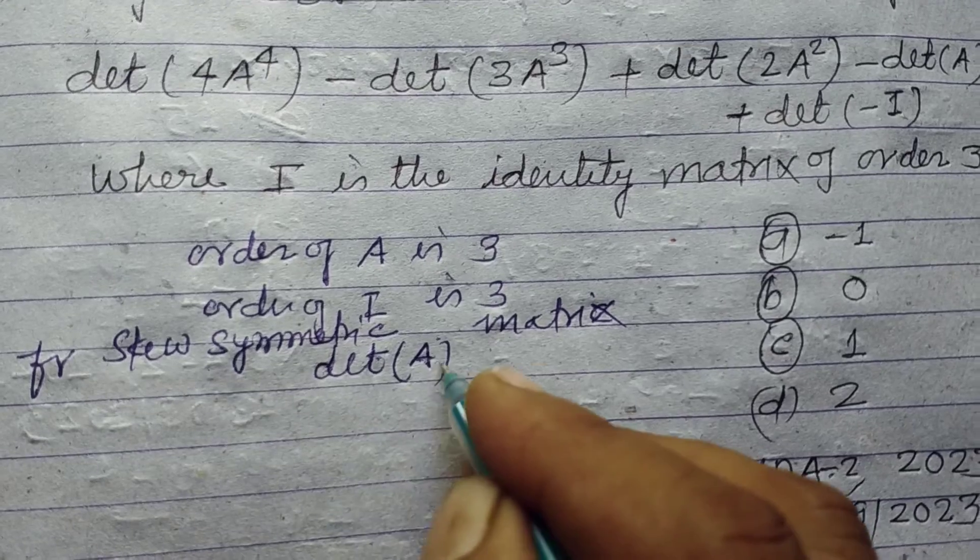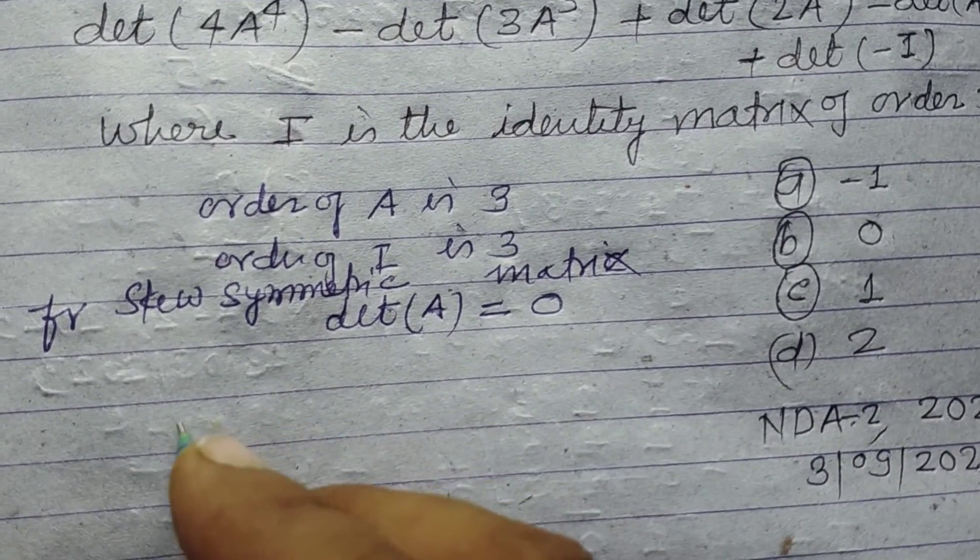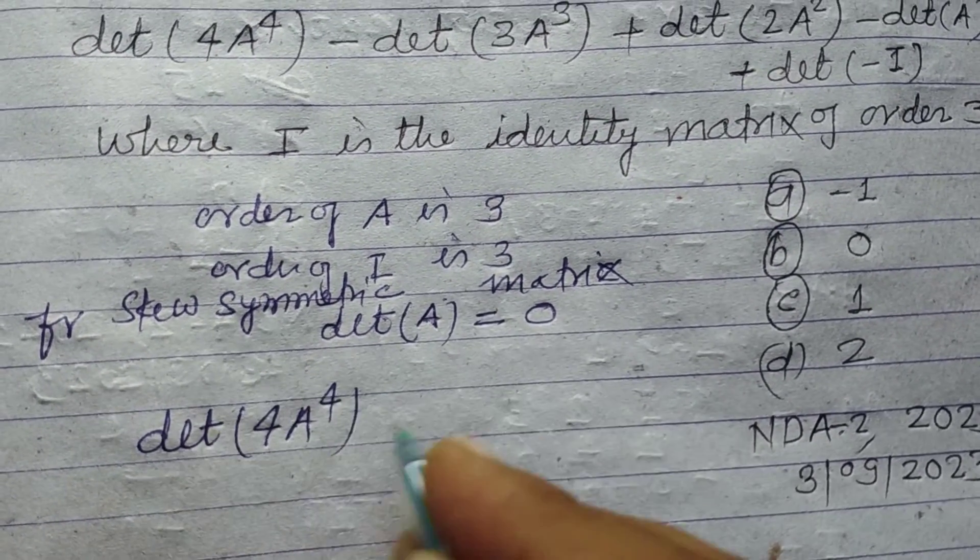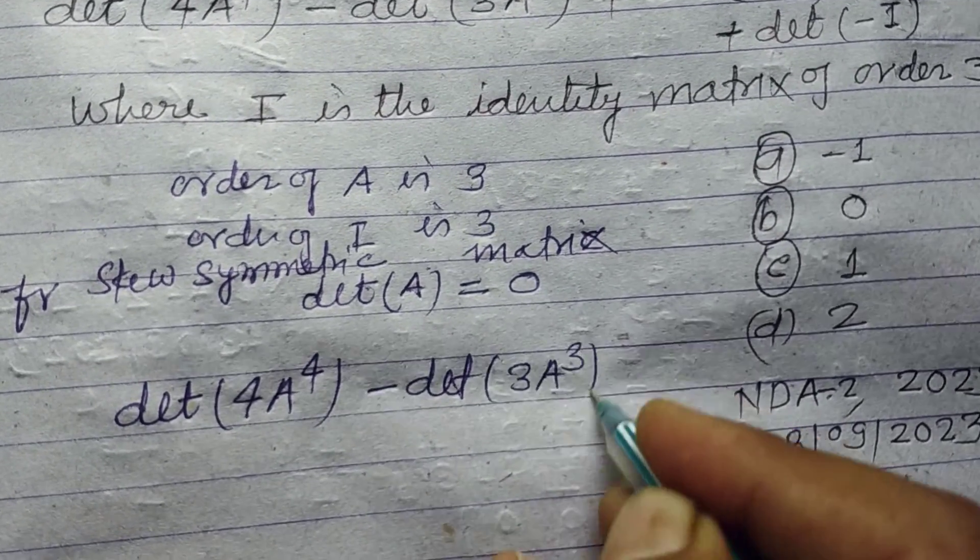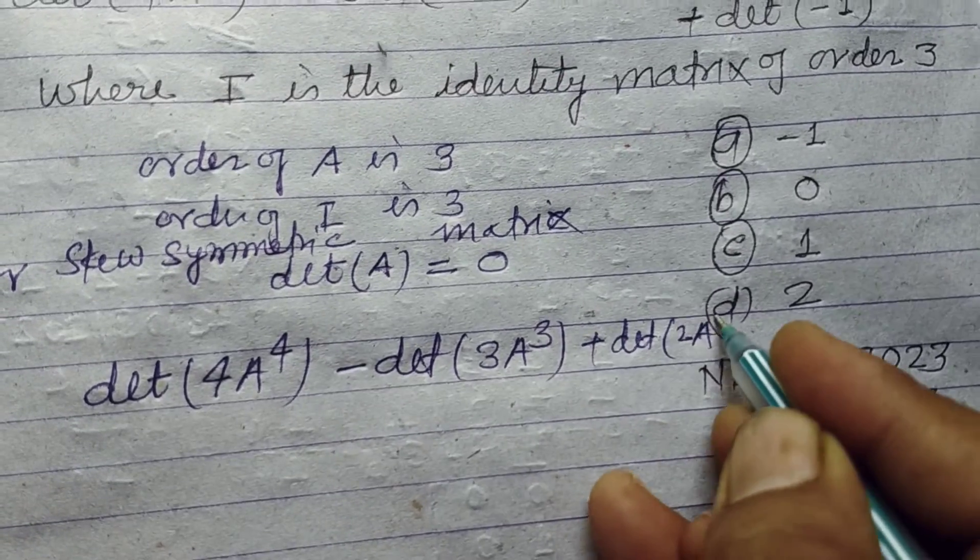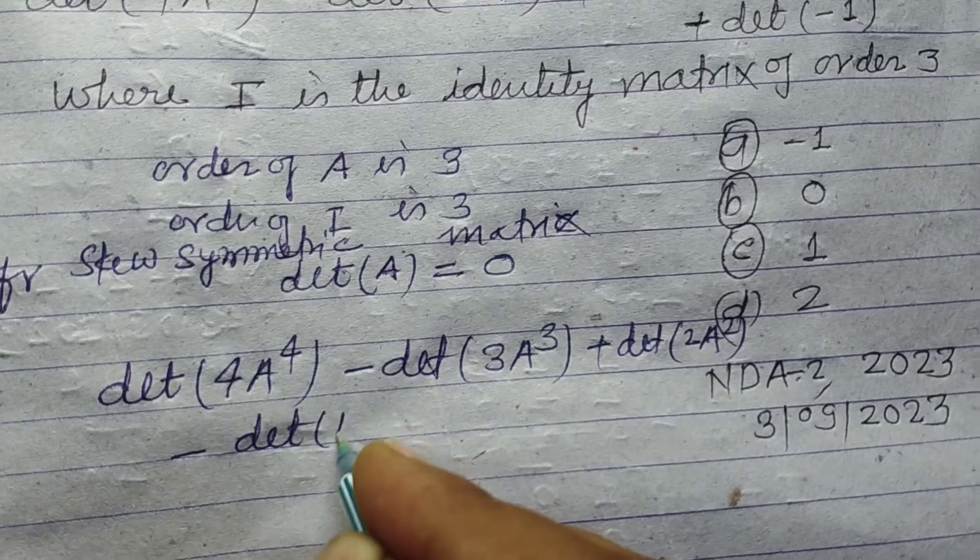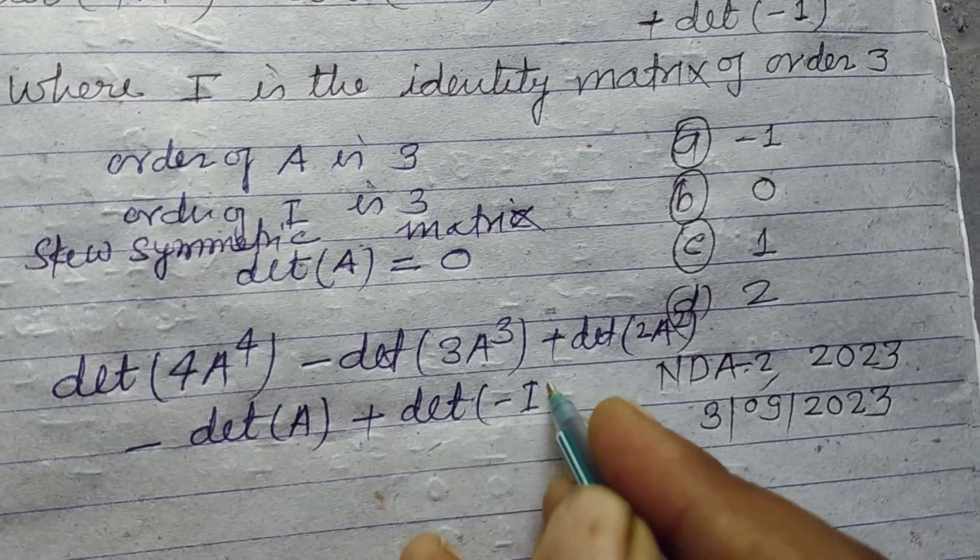So here given det(4A⁴) - det(3A³) + det(2A²) - det(A) + det(-I), this becomes 4⁴·det(A) - 3³·det(A) + 2²·det(A) - det(A) + det(-I).